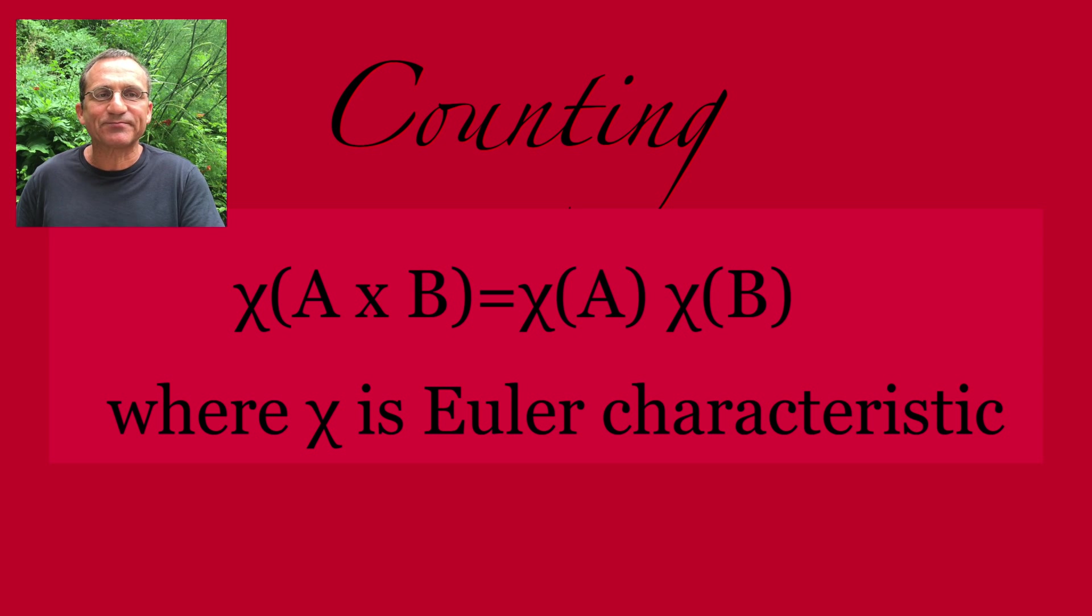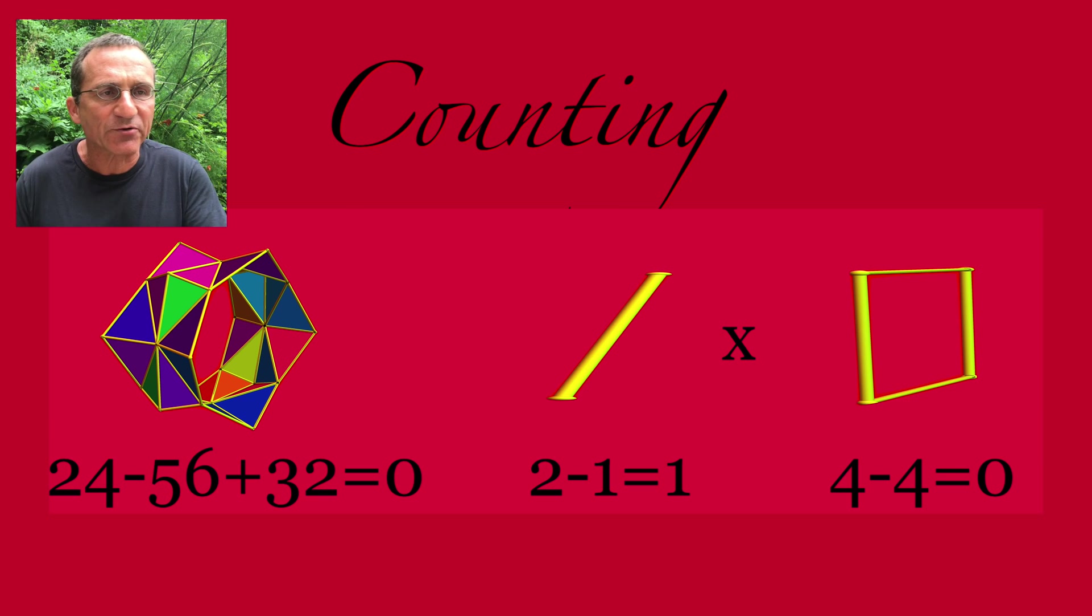Spot number four goes to a fundamental counting principle. It tells that if you take a product of two spaces, then the Euler characteristic multiplies. If you take four things in three boxes, we have twelve things. It is more general. It applies to geometries.